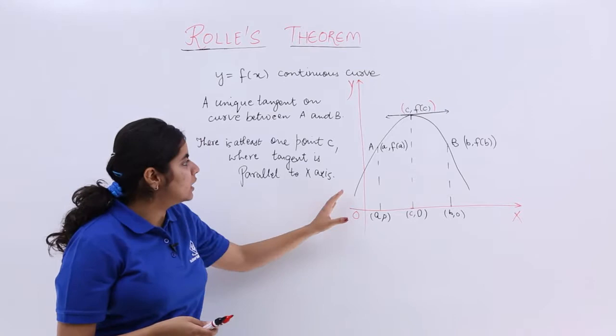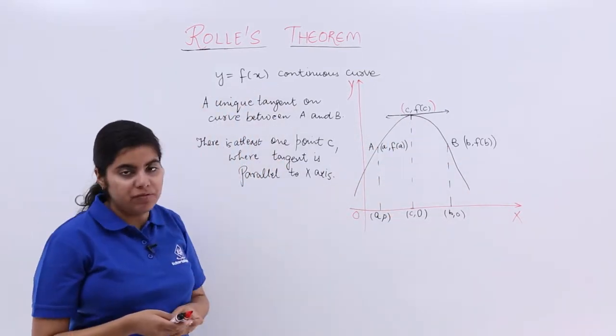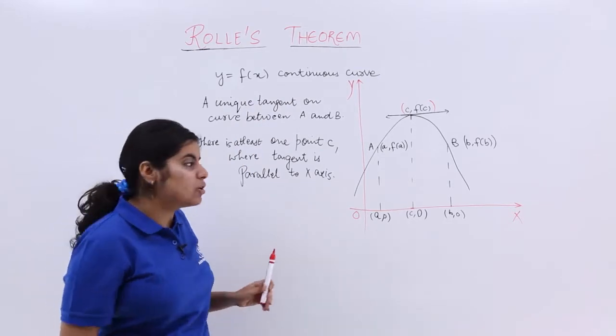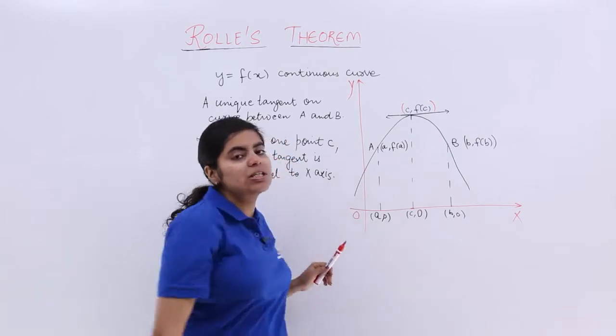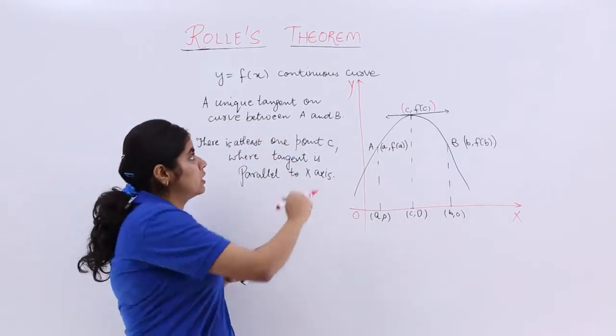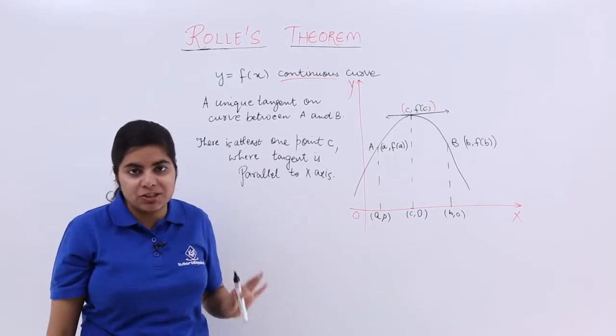Now, we have been given a curve and the curve as you can see can be named as y equals f(x). And as we can also see, the curve has no breaks, it has no kinks, it has no jumps. That means, this curve is a continuous curve. So I have f(x), or y equals f(x), as a continuous curve.